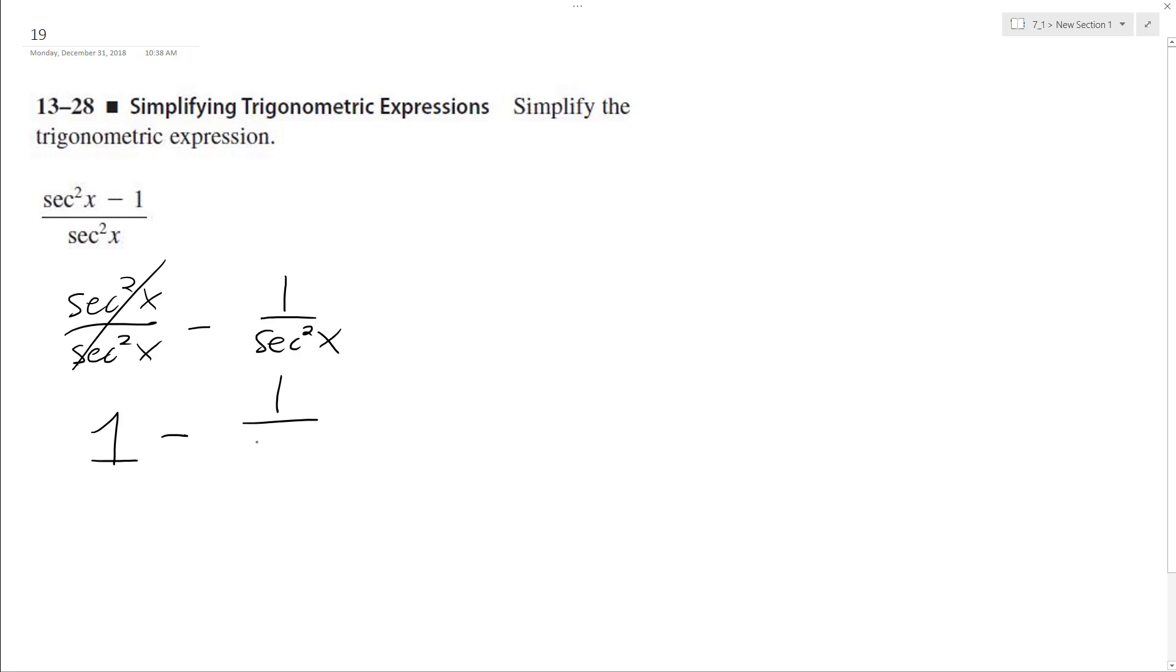And 1 over secant squared is the same thing as 1 over cosine squared x.